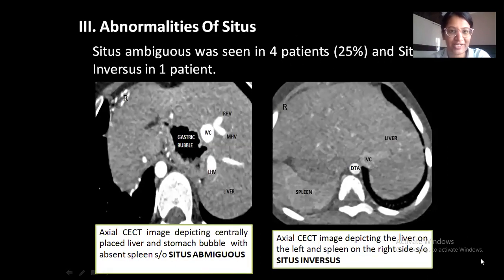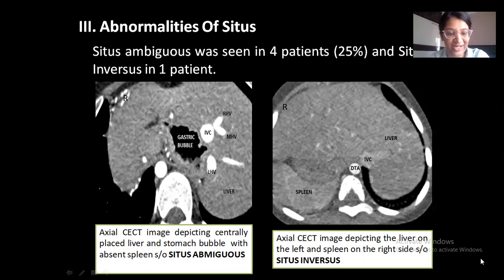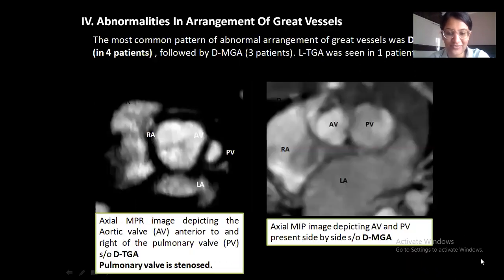Coming to abnormalities of situs: situs ambiguus was seen in four patients and situs inversus in one patient. The first image is an axial CCT image depicting centrally placed liver and stomach bubble with absence of spleen, suggestive of situs ambiguus. The second image is an axial CCT image depicting the liver on the left and the spleen on the right, suggestive of situs inversus.